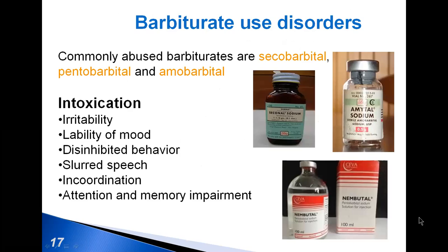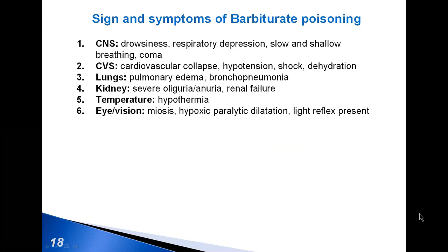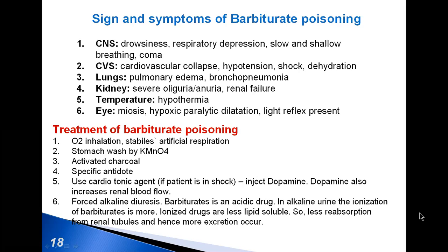Recreational users report that a barbiturate high gives them feelings of relaxed contentment and euphoria. Physical and psychological dependence may also develop with repeated use, and chronic misuse is associated with significant morbidity. Intoxication symptoms include irritability, lability of mood, slurred speech, and attention and memory impairment. Signs of barbiturate poisoning include disorders of the central nervous system, cardiovascular system, lungs, kidneys, and vision. Treatment includes artificial respiration, stomach wash, activated charcoal and antidotes, and forced alkaline diuresis.